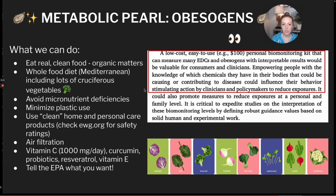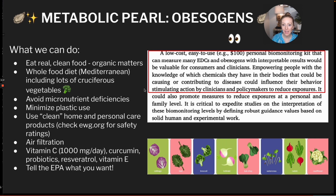We want to minimize plastic use and opt for things like glass and other materials. We want to use clean home and personal care products — environmentalworkinggroup.org is a great resource for finding clean products. We also want to filter our air if we can, because air pollution is a big part of this. The paper also mentions a call to action for people to think about creating a personal biomonitoring kit that can measure endocrine-disrupting chemicals and obesogens, to help people understand what's going on inside their bodies, what their levels are, and give them more biological observability.